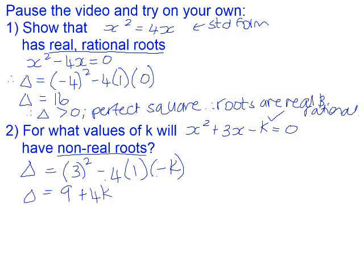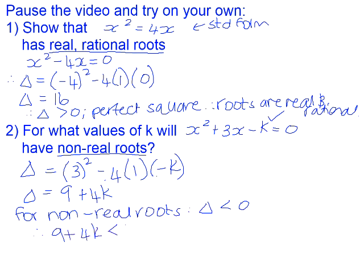If the equation has non-real roots, what do we know about the discriminant? We know that the discriminant is negative. So therefore, 9 + 4k will be less than 0.